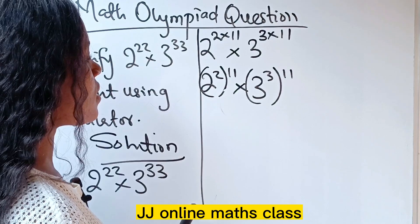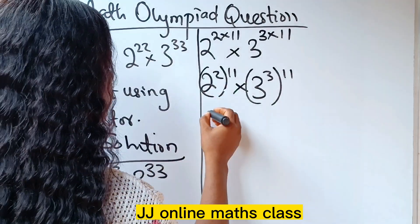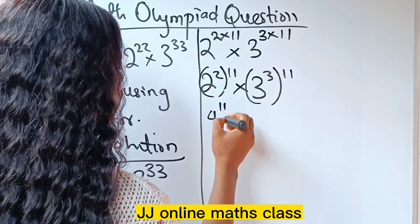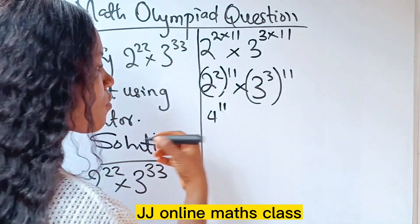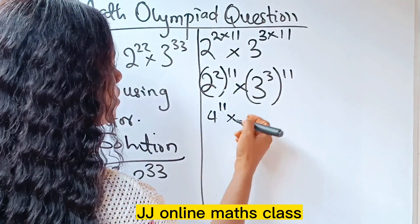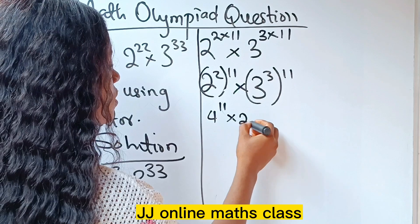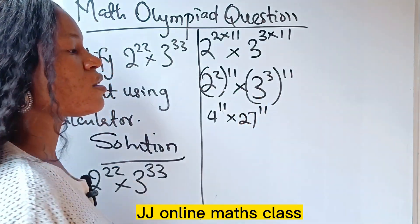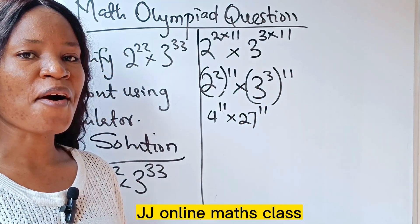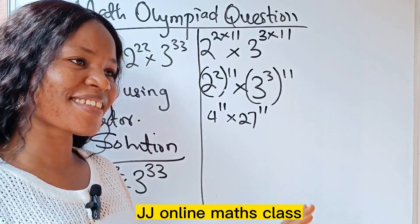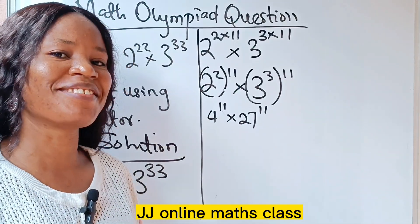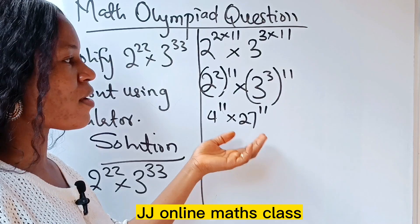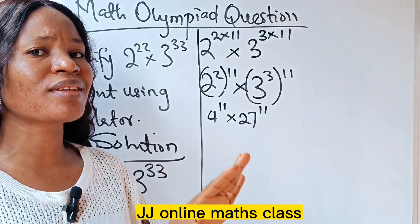We notice that 2 to the power of 2 gives us 4, so this becomes 4 to the power of 11. And 3 to the power of 3 is 27, so we have 27 to the power of 11.